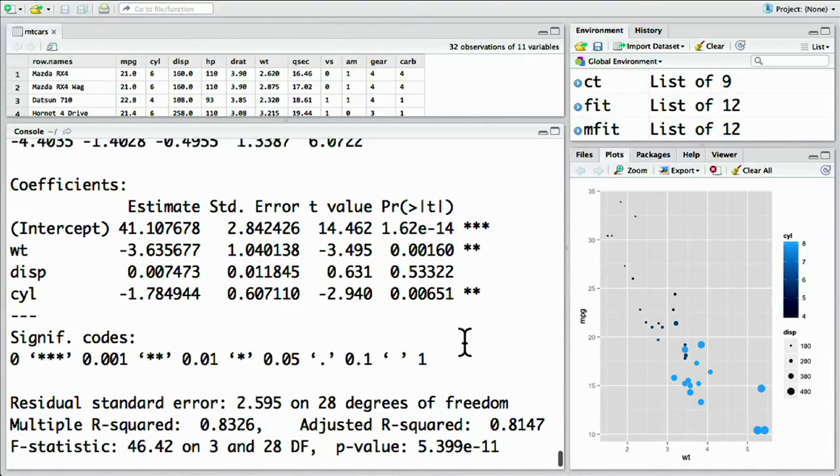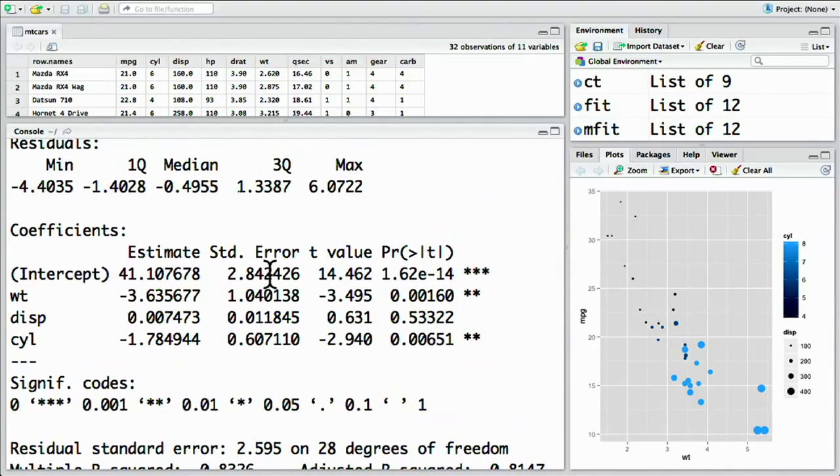Notice that the coefficients table now has four rows: one for the intercept and one for all three of our predictors. Each of these still contains an estimate of its coefficient or slope. It's negative for weight and for cylinder. It also contains a measurement of the p-value for each of these independently.